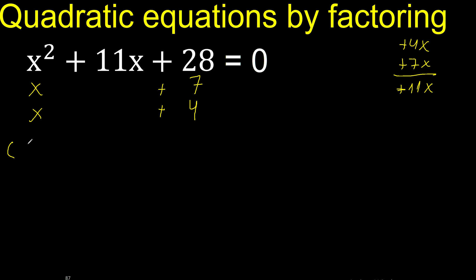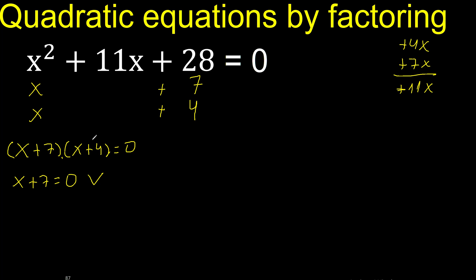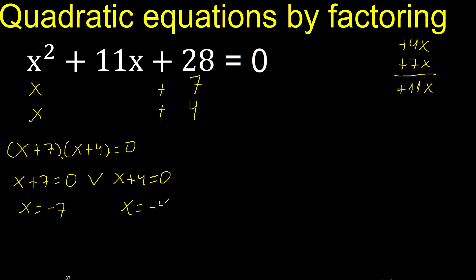Therefore, like this — here, like this. Multiplication equals 0, therefore this factor equals 0 or 0. Change the sign: minus 7. Change the sign: minus 4. Finish.